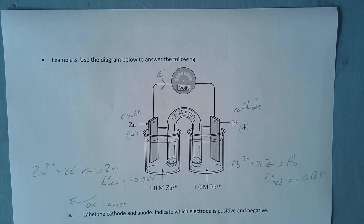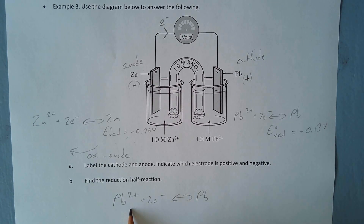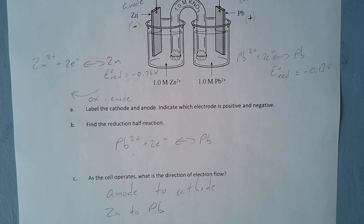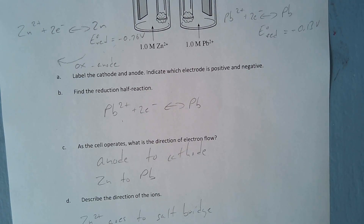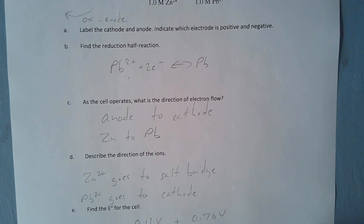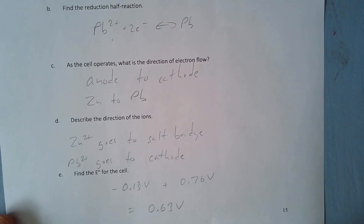Now we can write in the reactions. The reduction stays as is. Direction of electron flow is anode to cathode — from the zinc node to the lead node. For ion direction: Zn²⁺ goes toward the salt bridge, and Pb²⁺ goes toward the cathode. The anode mass decreases, the cathode mass increases. The E_cell is the sum of the two half-cell reactions — the reduction potential plus the oxidation (after flipping the sign) — giving an overall voltage of 0.63 V.